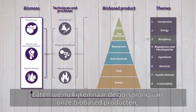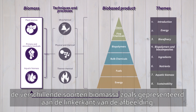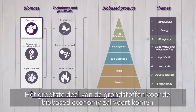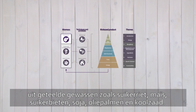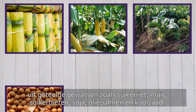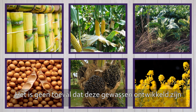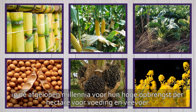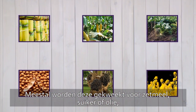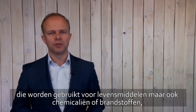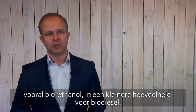Now, let's turn to the origins of our biobased products — the different types of biomass, as presented on the left-hand side of the picture. Most of the resources for the biobased economy will derive from purposely grown crops like sugar cane, maize, sugar beets, soy, oil palms, and rapeseed. These are the same crops developed over millennia for their high yield per hectare for food or feed. Mostly they are grown for starch, sugar, or oil, which are used for food but also for chemicals or transport fuels, mostly bioethanol and in a smaller amount for biodiesel.